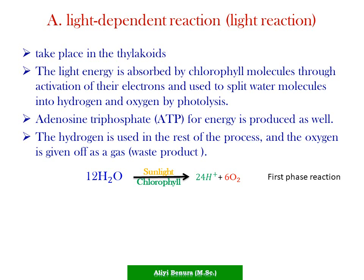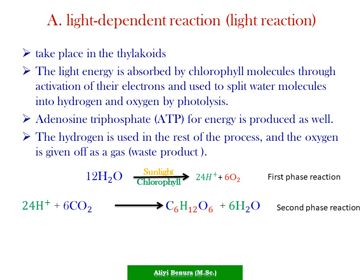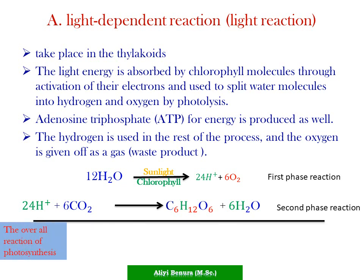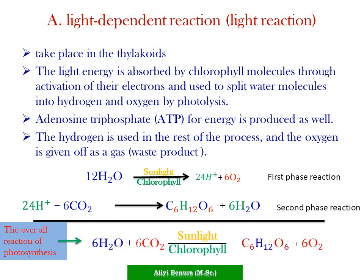ATP, a form of energy, is produced in the first phase of the light-dependent reaction. The combination of carbon dioxide and hydrogen molecules from water to form glucose is the second phase. The overall reaction of photosynthesis: water molecules combined with carbon dioxide, in the presence of sunlight and chlorophyll, forming glucose and oxygen.